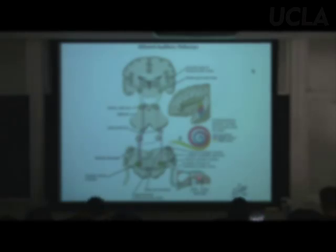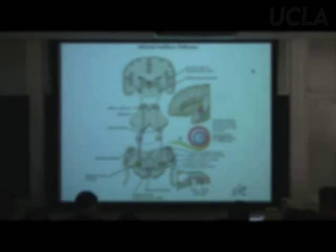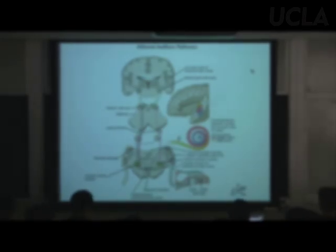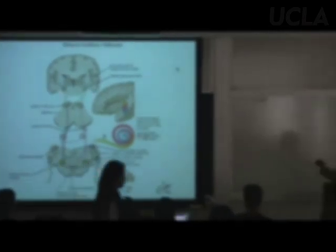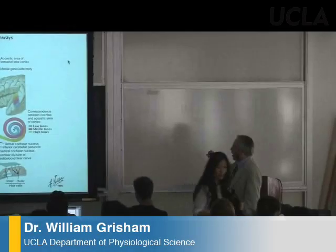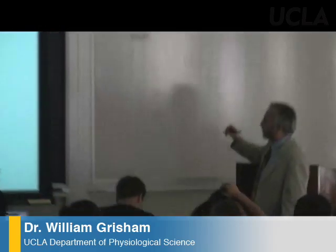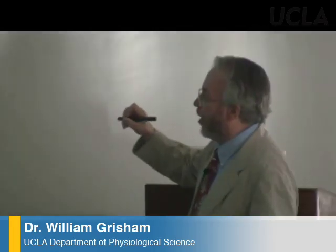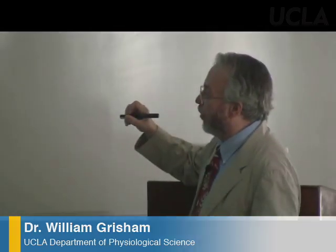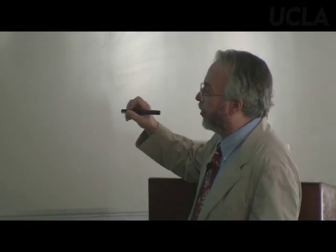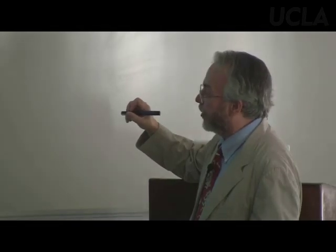These axons come in from the cochlea and form a nerve — the vestibulocochlear nerve, cranial nerve eight. The first synapse is going to be either in the ventral cochlear nucleus, or a few of them go up to the dorsal cochlear nucleus.